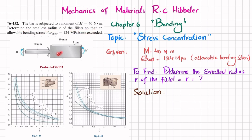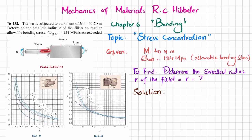The bar is exerted by a moment of 40 newton-meters. The cross section has a height of 80 millimeters and a width of 7 millimeters on one side, and a height of 20 millimeters and a width of 7 millimeters on the other side. Due to the change in cross-sectional area from 80 to 20, there is stress concentration in this region. We need to determine the smallest radius r of the fillet.